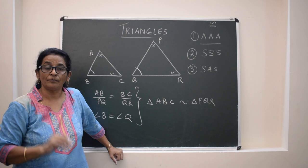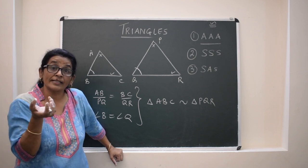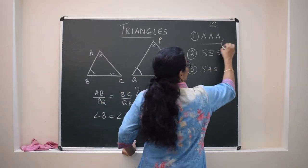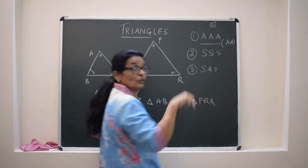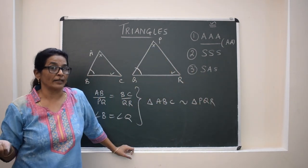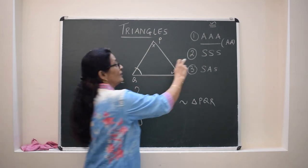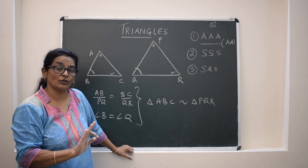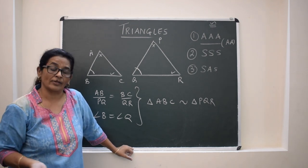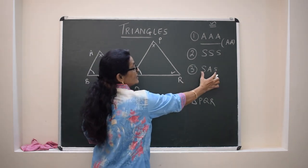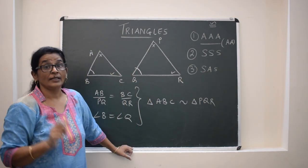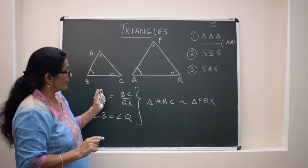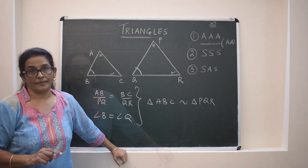So what we have seen: there are three criteria. AAA — but AAA contains the AA corollary, meaning only AA will also work because automatically the third angle will be equal by angle sum property. Second, SSS — when all three sets of sides are in the same ratio, corresponding angles will be equal and triangles will be similar. Or third, SAS — two sides ratio equal and the included angle equal, then the triangles will be similar.